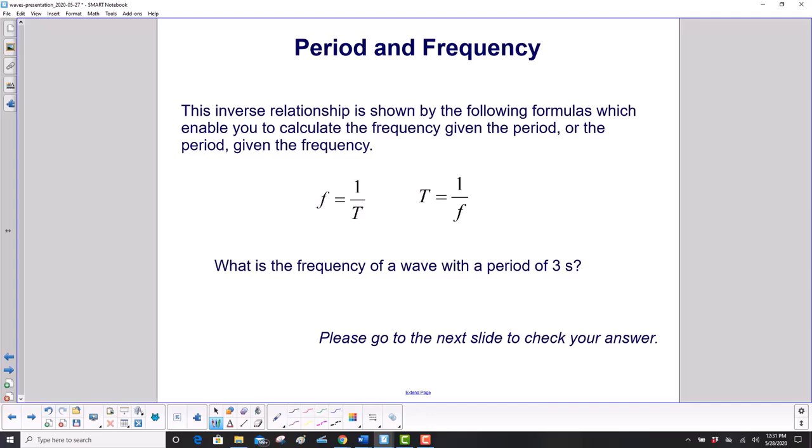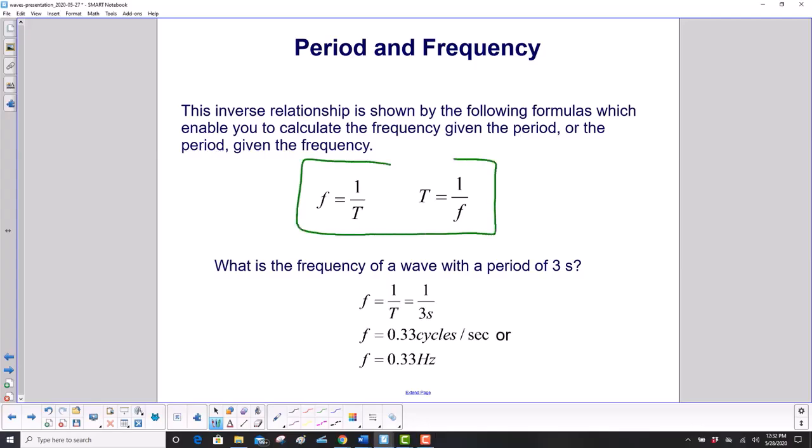Of course, we have mathematical ways of showing it. The inverse relationship is shown by frequency is one over the period (f = 1/T), or period is one over frequency (T = 1/f). So let's solve a quick problem here. What is the frequency of a wave with a period of three seconds? We'll use this equation: frequency is one over T, one over three seconds. So that's 0.33 cycles per second, or 0.33 hertz.